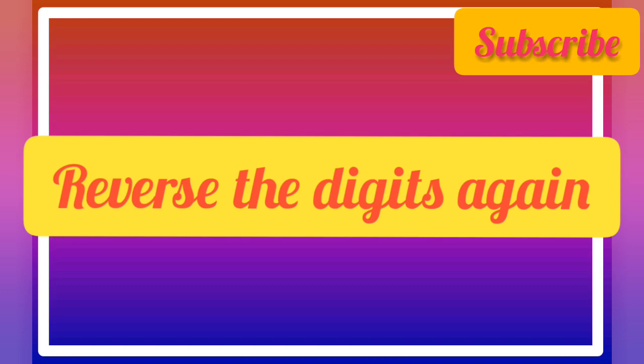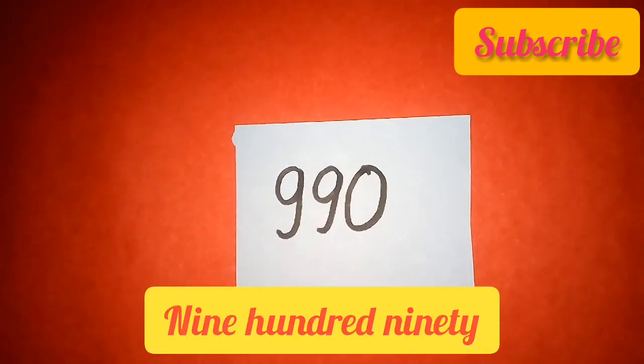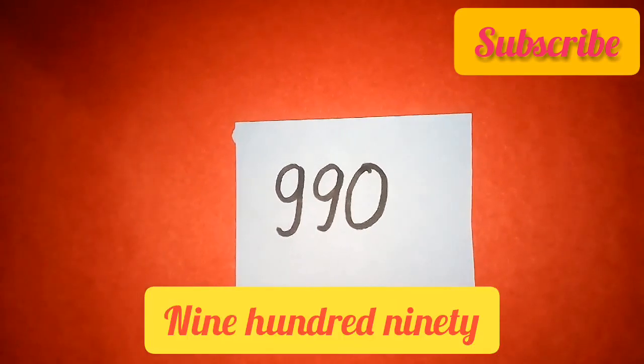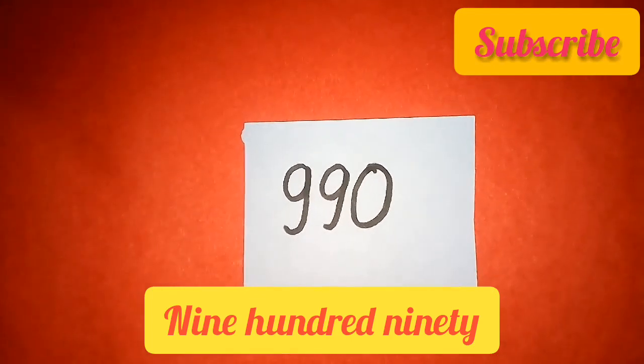Reverse the digits again. In previous step, you got a difference and for the next step, you have to reverse the digits of that number. Means, as I got 0 9 9, the reverse of my number will be 9 9 0, means 990. It is the reverse of the difference.